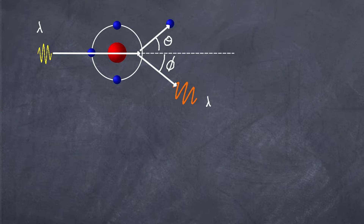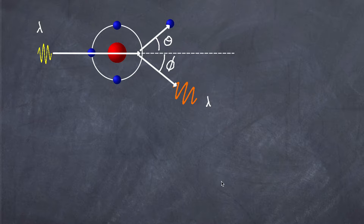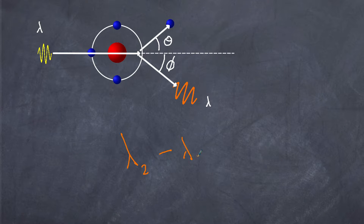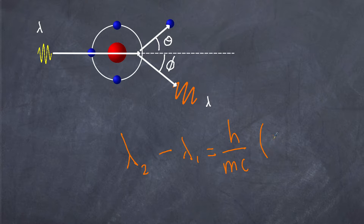Compton scattering is a case where an incoming photon of X-rays scatters off an electron and the outgoing photon ends up having a longer wavelength. That's known as the Compton effect or Compton scattering. In this video I'm going to solely concentrate on how the formula for Compton scattering is derived. The formula states that lambda 2 minus lambda 1 is equal to h over mc, multiplied by 1 minus the cosine of phi.